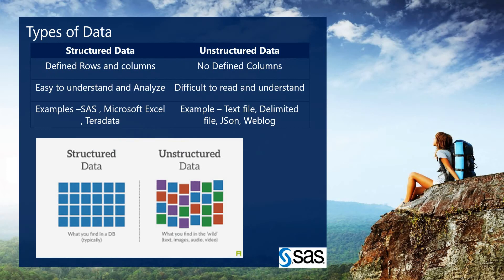First, let's talk about types of data. We have two types of data in every programming language: structured data and unstructured data. Structured data has defined rows and columns, while unstructured data has no defined columns. Structured data is easy to understand and analyze. Examples of structured data are SAS, Microsoft Excel, and Teradata.